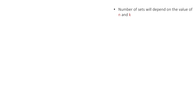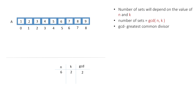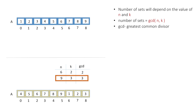The number of sets depends on n and k, and equals the GCD of n and k — the greatest common divisor, the greatest number that divides both n and k. We verify this: for n=6 and k=2, GCD(6,2)=2, which equals the number of sets we had. Taking another example with an array of 9 integers where k=3: GCD(9,3)=3, so we divide into three sets, and after rotation the array looks as shown.